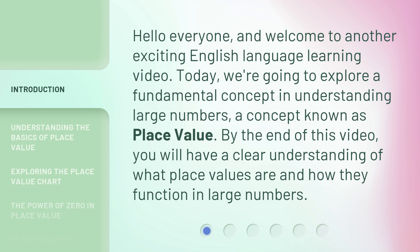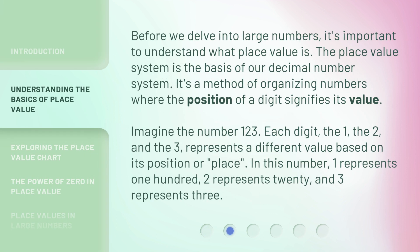By the end of this video, you will have a clear understanding of what place values are and how they function in large numbers. Before we delve into large numbers, it's important to understand what place value is. The place value system is the basis of our decimal number system — it's a method of organizing numbers where the position of a digit signifies its value.